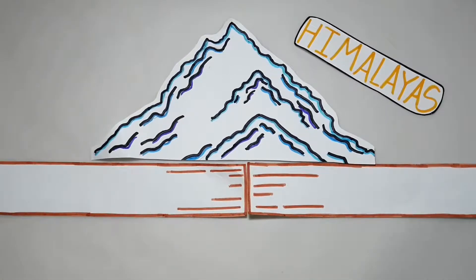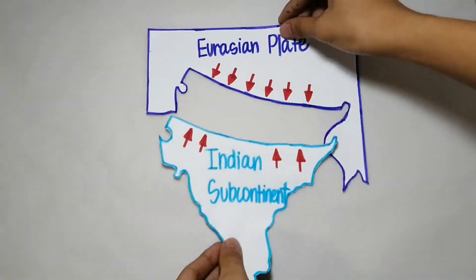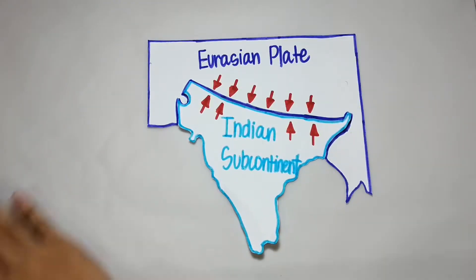Take the Himalayas for example. The mountain range is said to grow 10 cm every year as the Indian subcontinent constantly pushes towards the Eurasian plate.